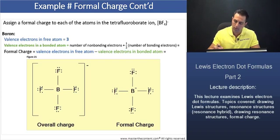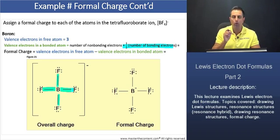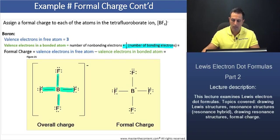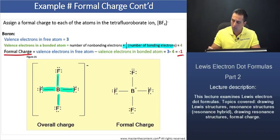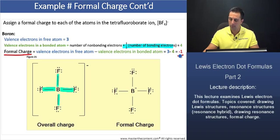boron does contribute one electron to each of the four covalent bonds, for a total of four electrons. Thus, the number of valence electrons in a bonded boron atom is four. The formal charge for boron is three minus four, which equals negative one, as we predicted on the previous slide.